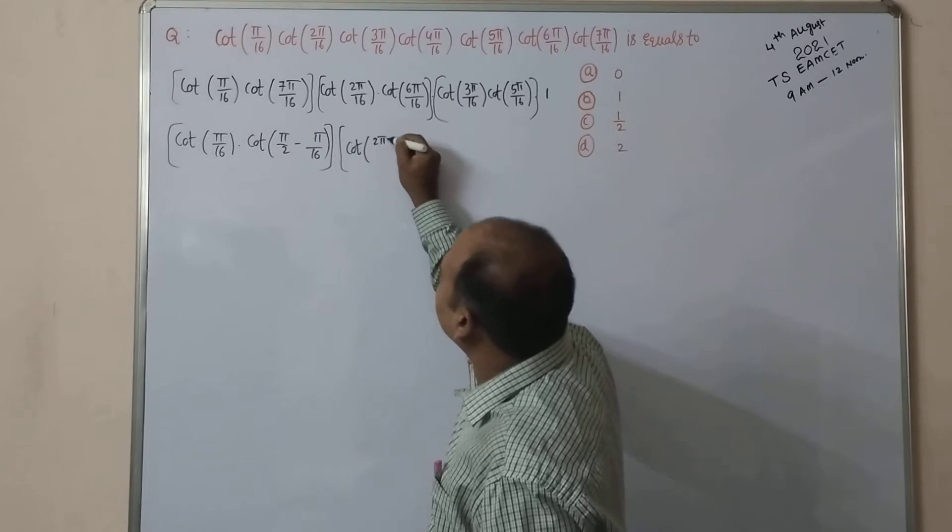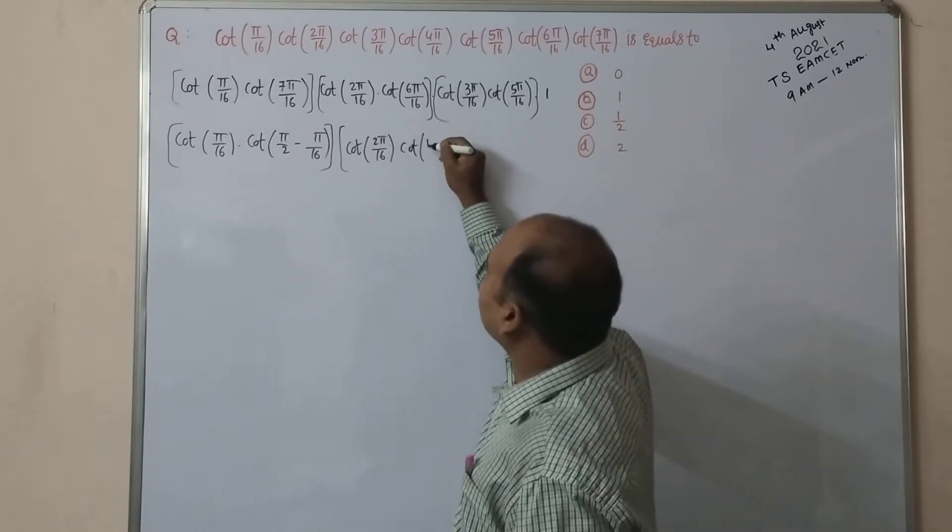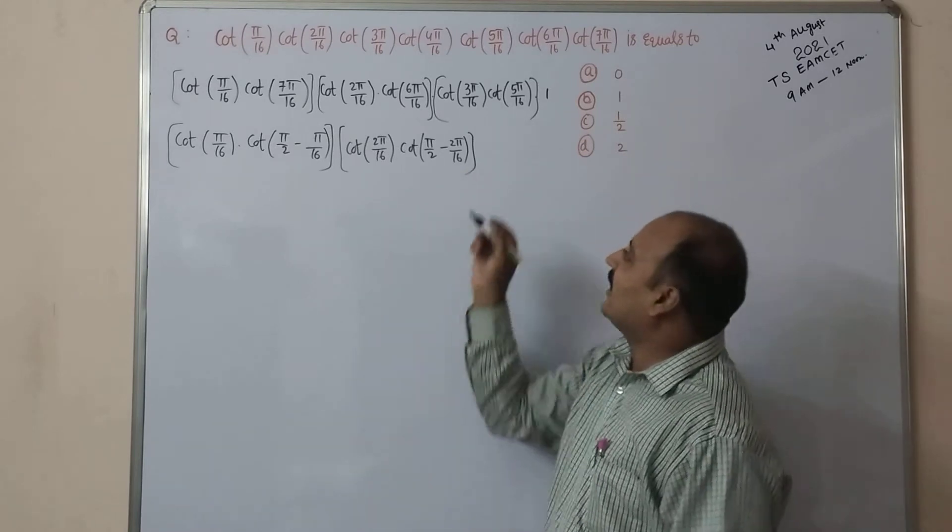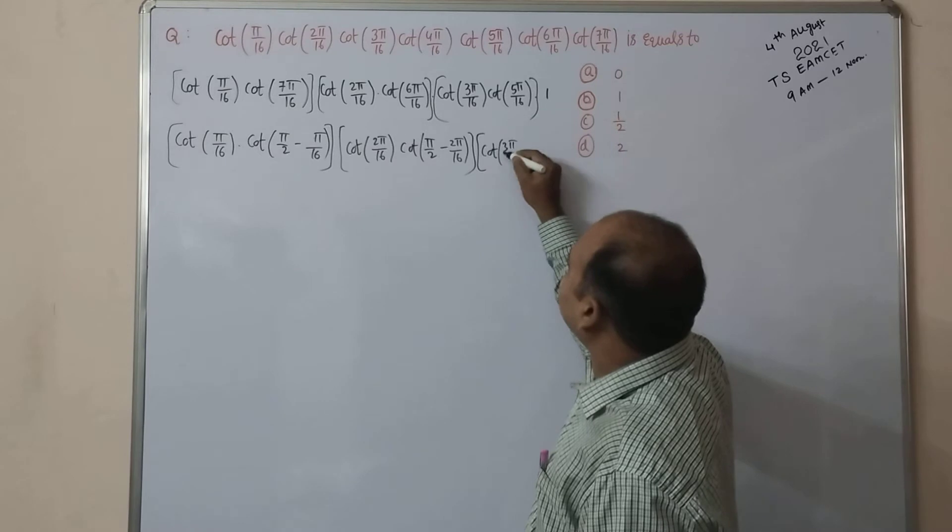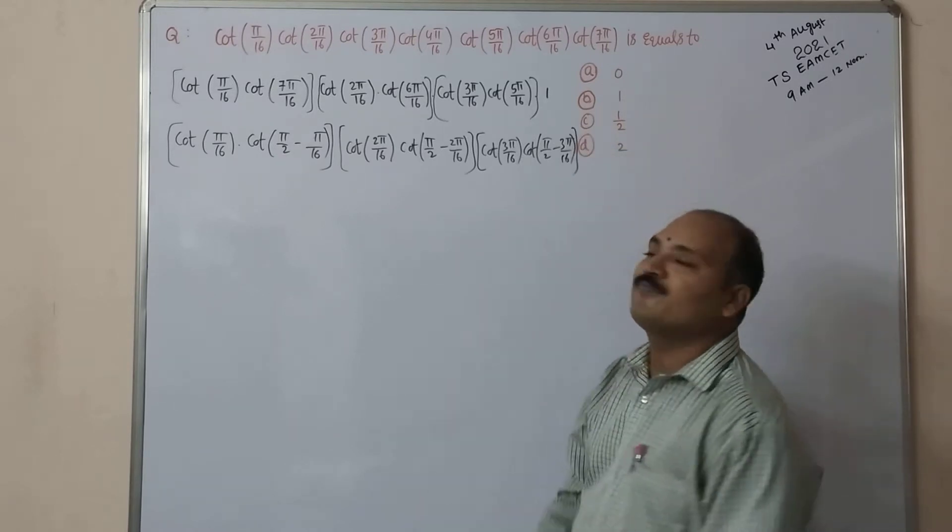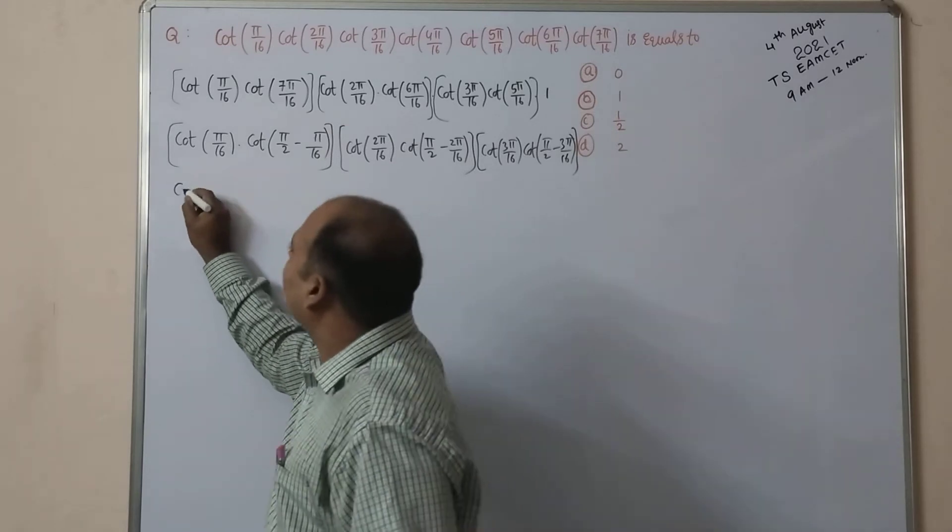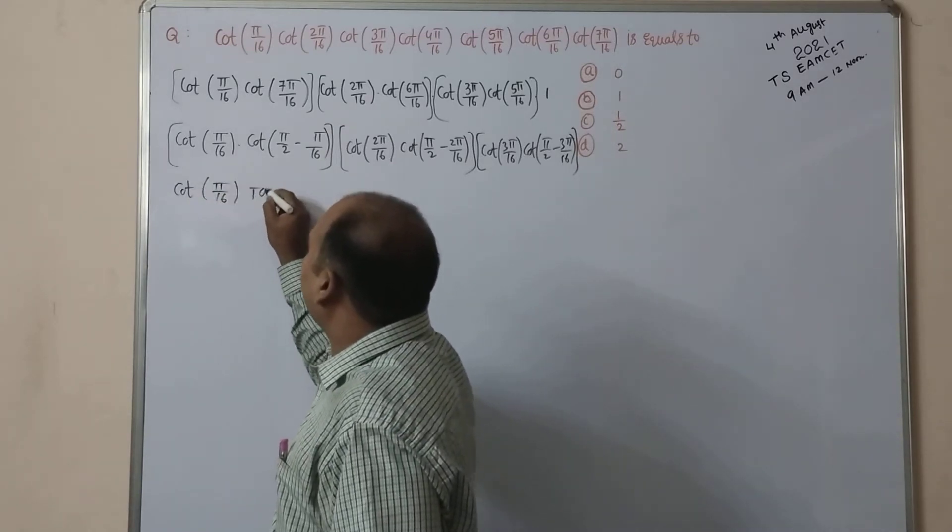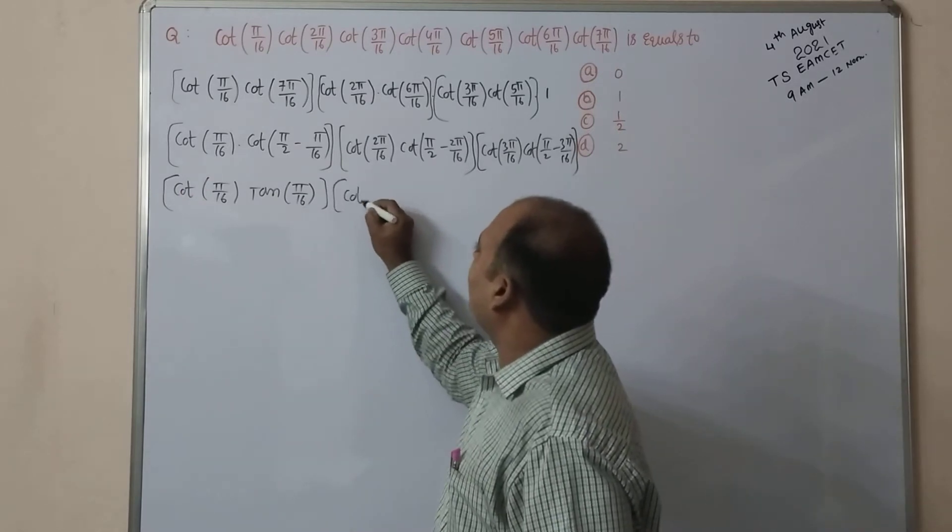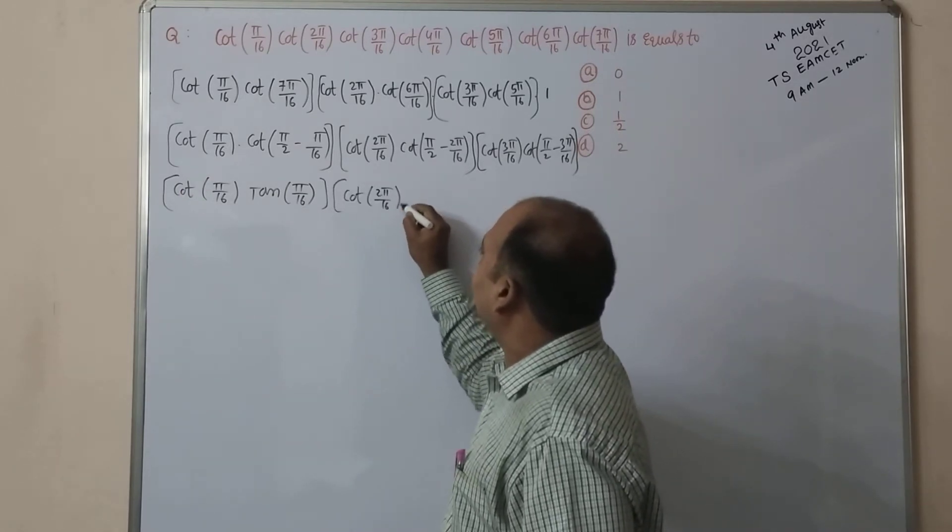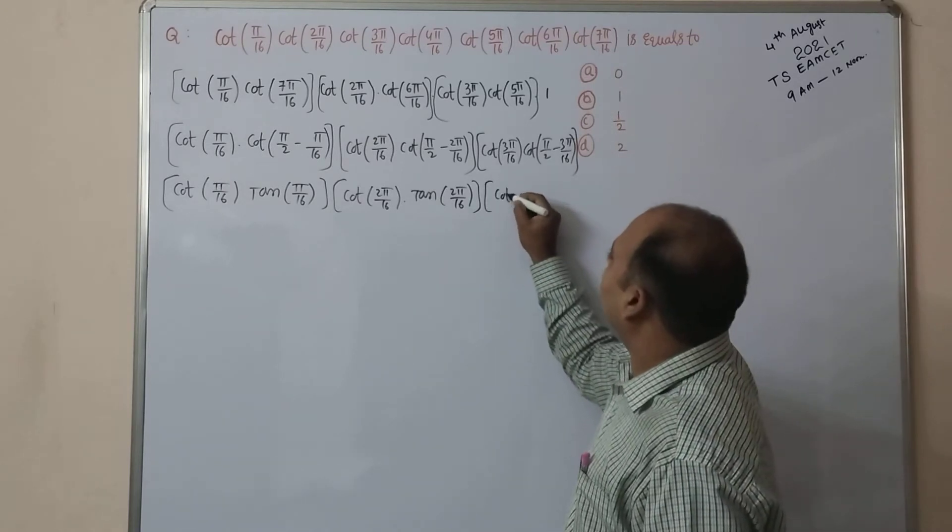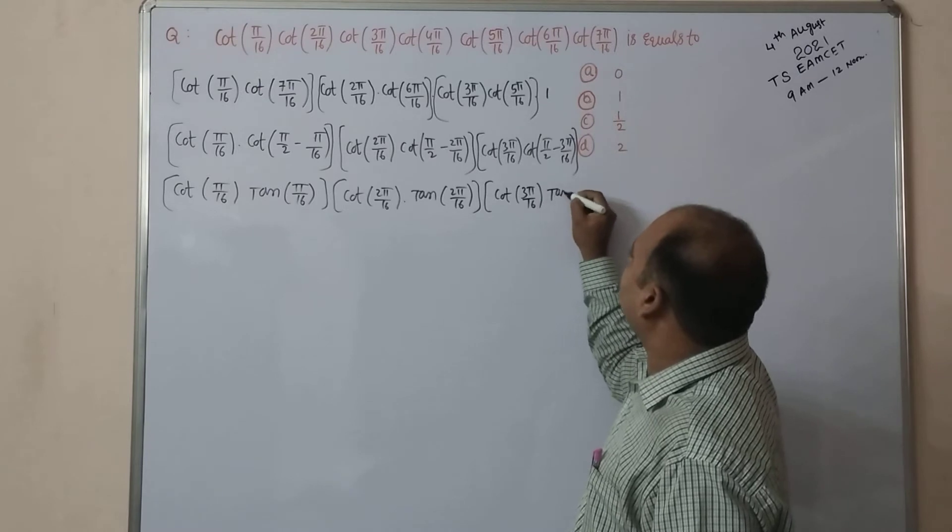Similarly, cot(2π/16) into cot(6π/16) can be written as cot(2π/16) into cot(π/2 - 2π/16). Similarly, cot(3π/16) into cot(π/2 - 3π/16). Cot of 90 minus theta can be written as tan theta. So cot(π/16) into tan(π/16), second one cot(2π/16) into tan(2π/16), next cot(3π/16) into tan(3π/16).